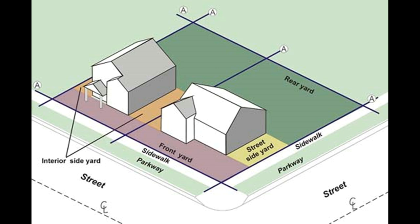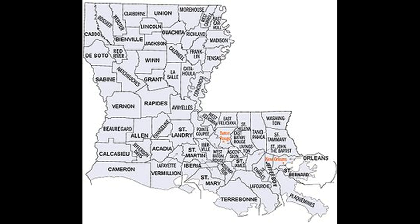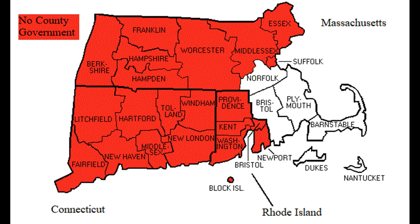Now, some states are too cool to call them counties, so in Alaska they're called boroughs, and in Louisiana they're called parishes. And some states are too cool to have their counties do anything beyond being used for census data, like in New England, where Connecticut, Rhode Island, and parts of Massachusetts have eliminated their county governments altogether, mostly in favor of the township model.